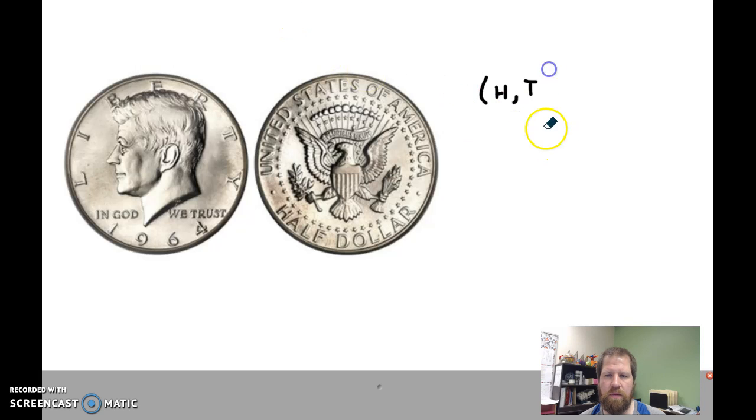Now, if I'm flipping two coins, I've got to look at, this could be heads, this one could also be heads, so my sample space would be heads, heads. This could be tails, with this being tails, it could be tails, tails. And this is where I think mistakes happen a lot.